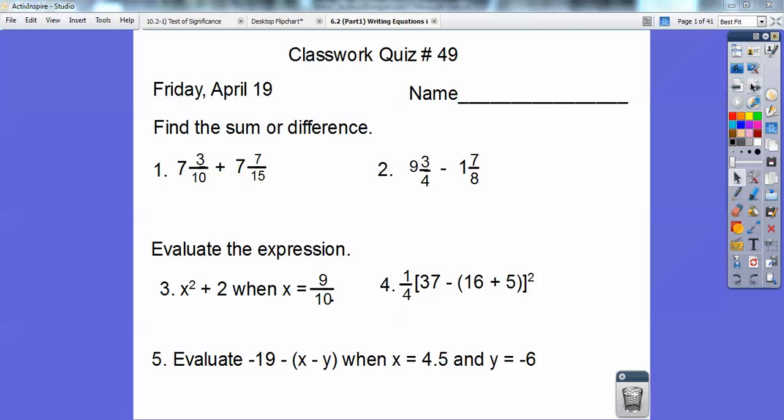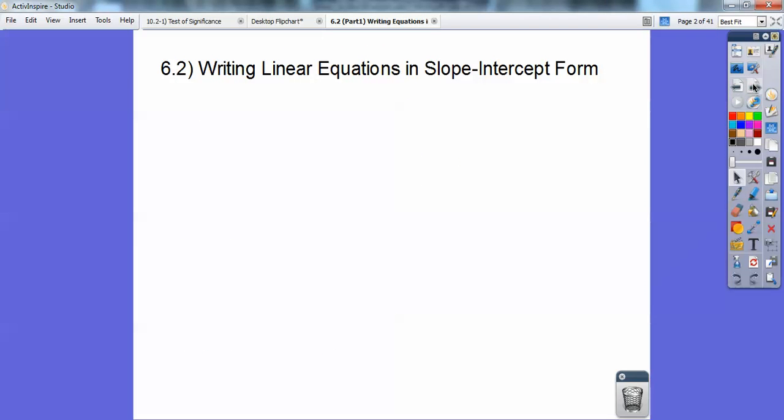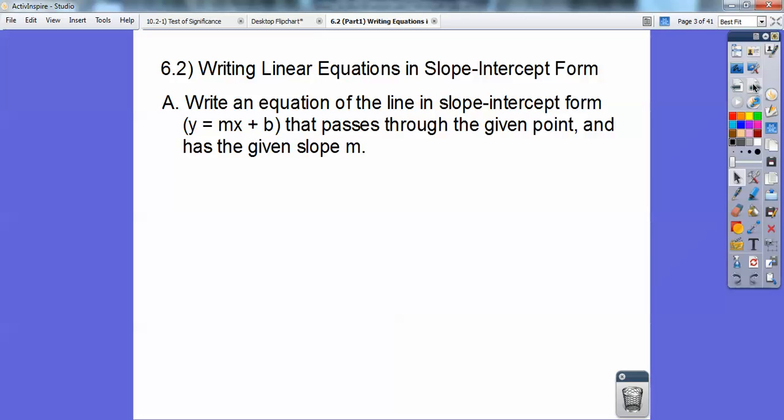Alright, now that you come back, let's begin. Writing linear equations in slope-intercept form. The first part, section A: write an equation of the line in slope-intercept form, which is y equals mx plus b, that passes through the given point and has the given slope.